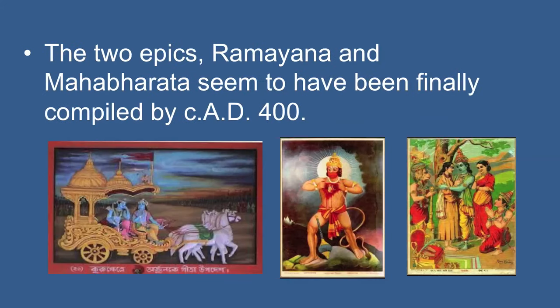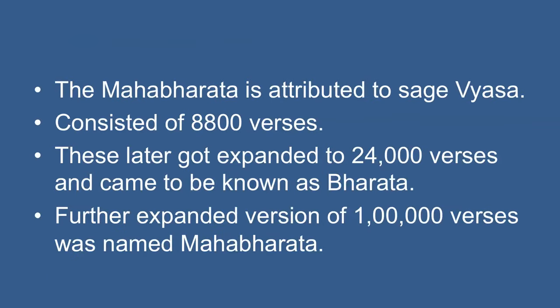The two epics Ramayana and Mahabharata seem to have been finally compiled by 400 AD. The Mahabharata is attributed to sage Vyas. It originally consisted of 8,800 verses and was called Jayagit. These later expanded to 24,000 verses and came to be known as Bharata, because it contained the stories of the descendants of one of the earliest Vedic tribes called Bharata. A further expanded version of one lakh verses was named Mahabharata. Similarly, the Ramayana of Valmiki originally consisted of 6,000 verses, then 12,000 verses, and was finally expanded to 24,000 verses.